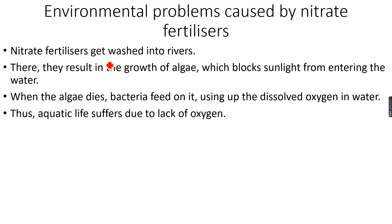When the ammonium nitrate flows into nearby rivers, it results in the rapid growth of algae — because algae is a plant and NH4NO3 is a fertilizer that encourages plant growth. This algae forms a layer over the water, blocking sunlight from entering, and sunlight is very important for aquatic life.